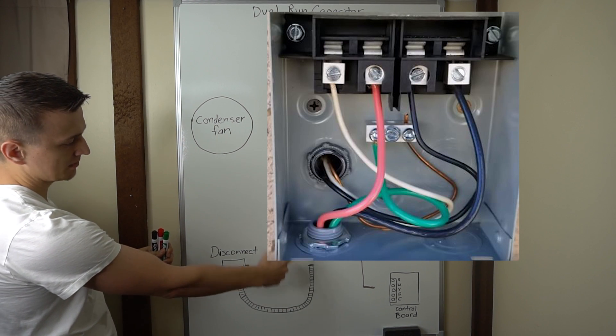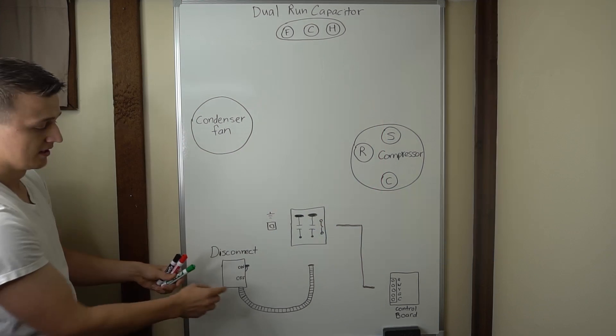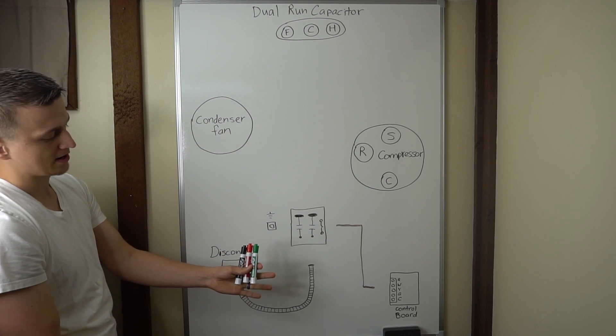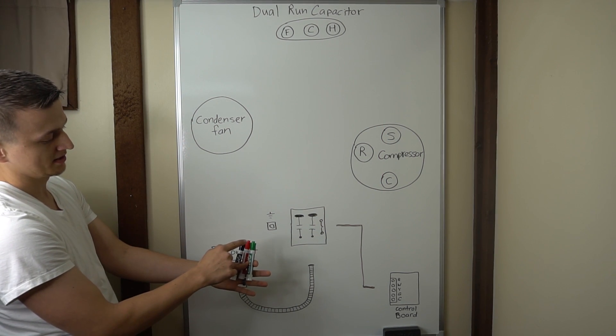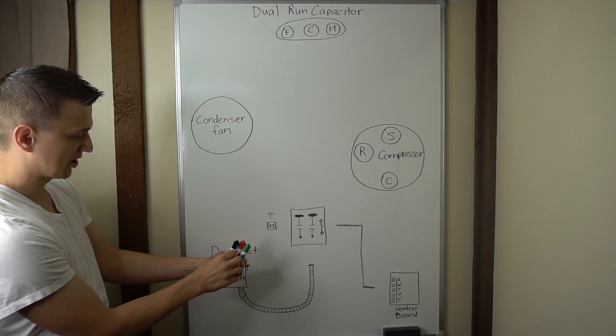And then from there it goes through the electrical whip and into the contactor. So this electrical whip will have three wires. Usually they're going to be black, red, green, and we're going to go ahead and start with them.